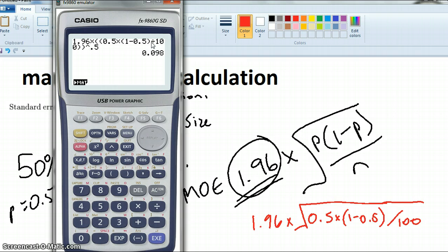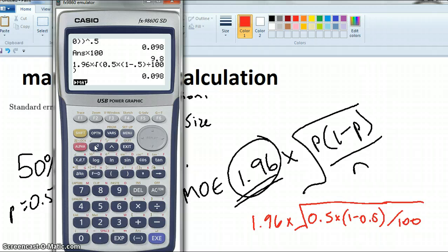Okay, so we get 9.8% is our margin of error. So I can times by 100 and I get 9.8%. I'm going to do that again with a bit less brackets. 1.96 times, and I'm going to go shift square root, and 0.5 times 1 minus 0.5 divided by 100. Close bracket. So I've got the exact same answer.